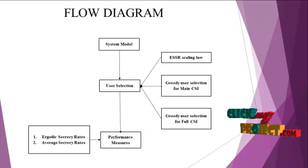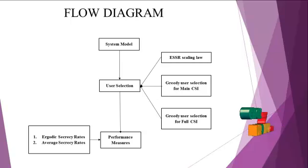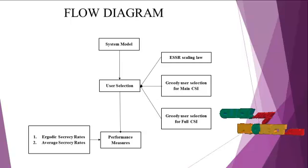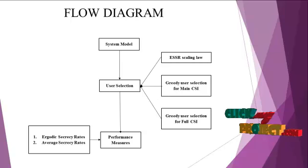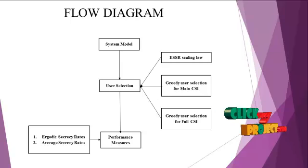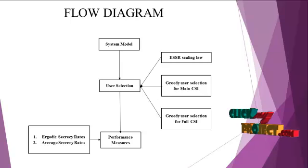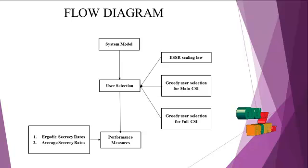Two important methods are calculated. The first one is ergodic secrecy rate and the second one is average secrecy rate. In ergodic secrecy rate, the region is for two fading multiple access wiretap channels. In average secrecy rate, communication is accomplished with the help of numerous trusted relays. Finally, we calculate how many users are getting the information with secrecy.